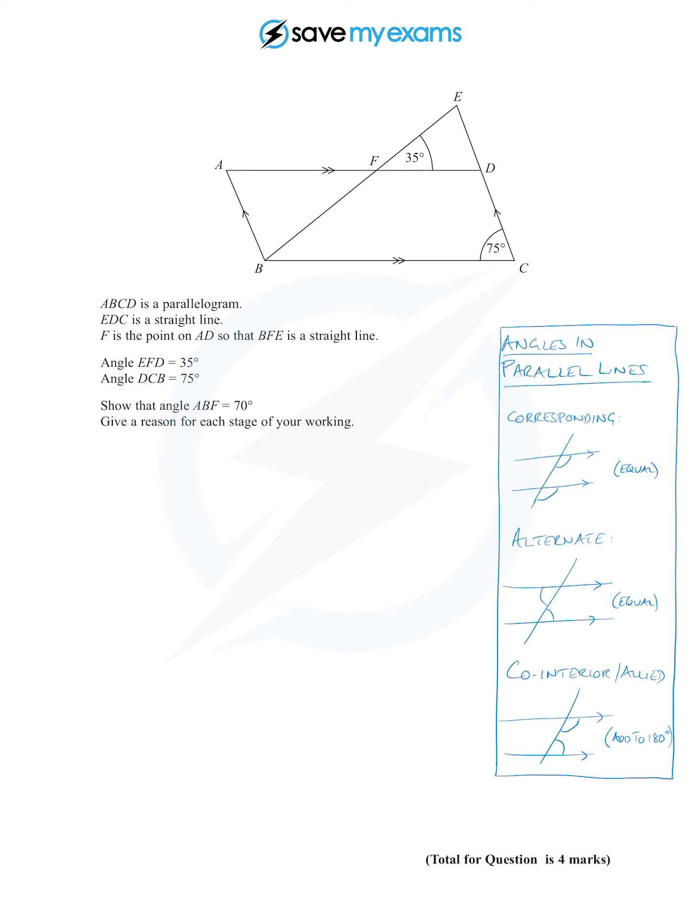We have corresponding angles which make this sort of shape here, but don't you dare call them F angles anymore. Corresponding angles are equal. Then we have alternate angles, those two. They're also equal, they make this shape but they're not Z angles, they are alternate angles.